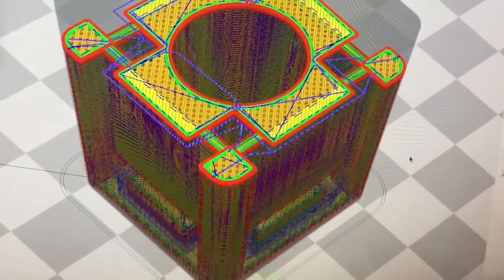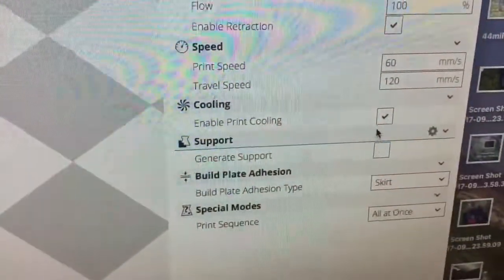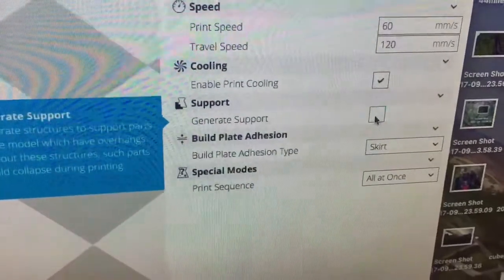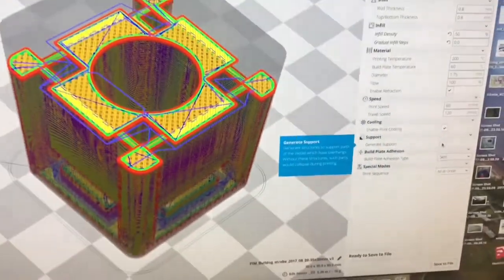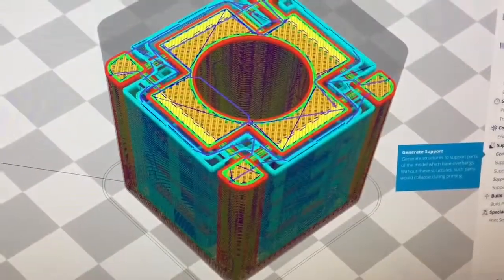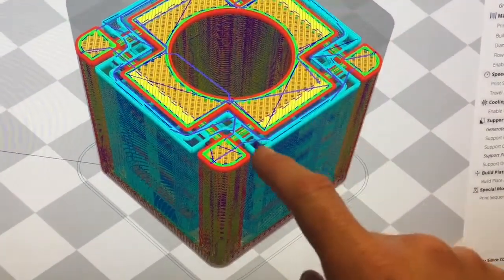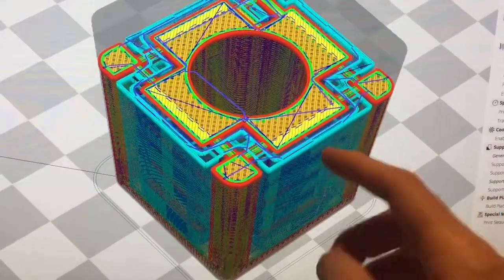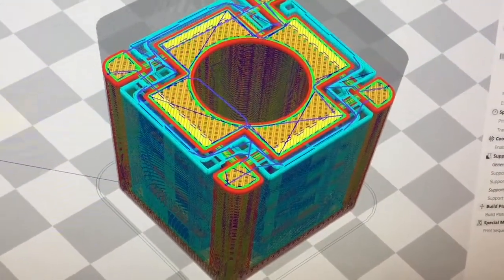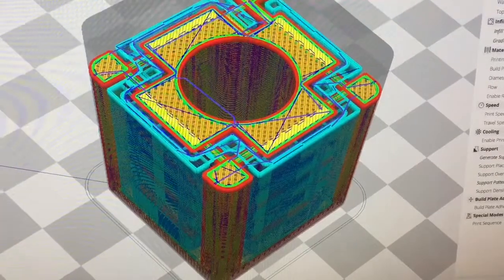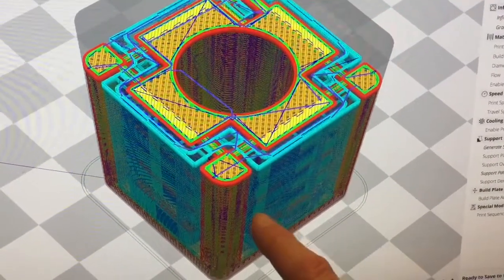Which will probably mean I need to generate support—you just click that tick box there and it adds in support. The blue coloring here will be the same color as the plastic because there's only one filament going through the printer.